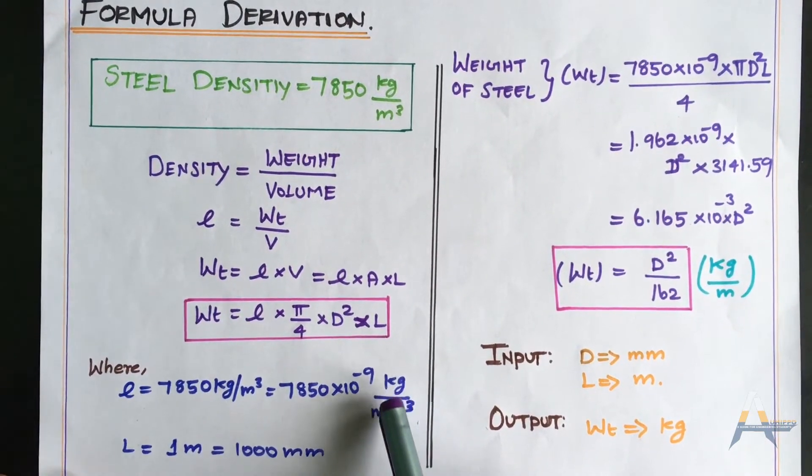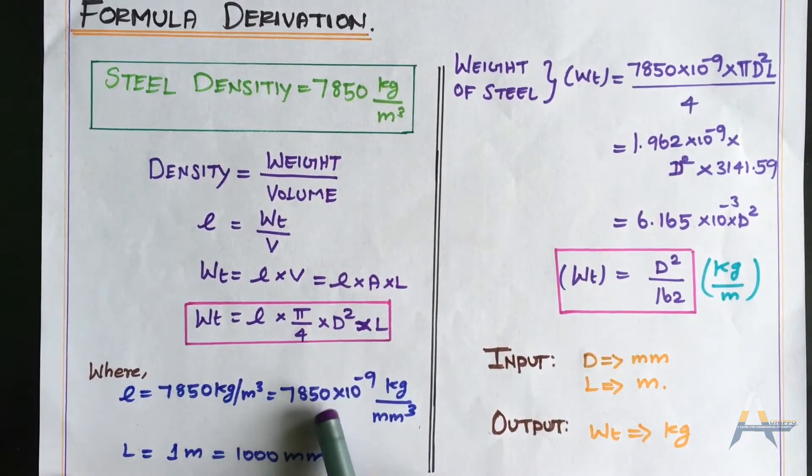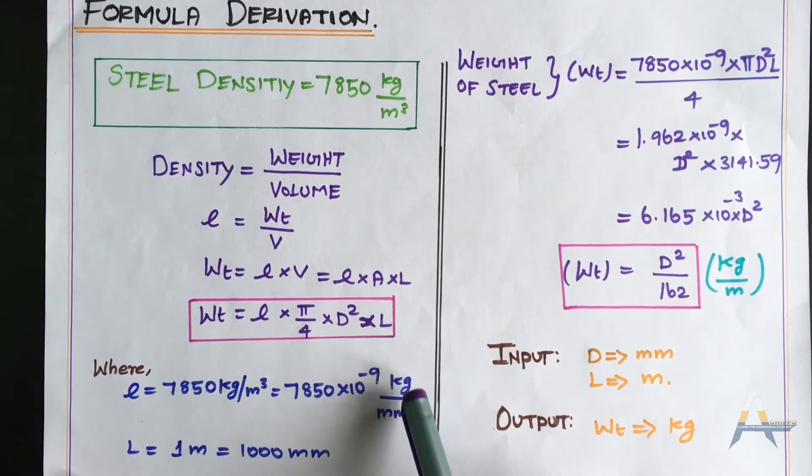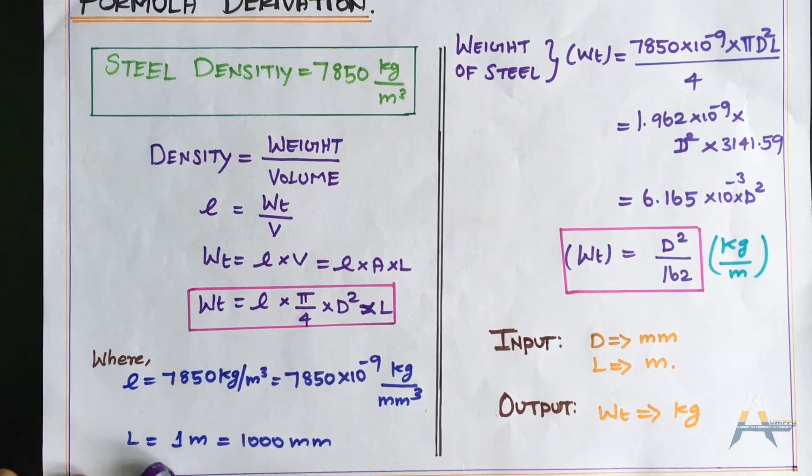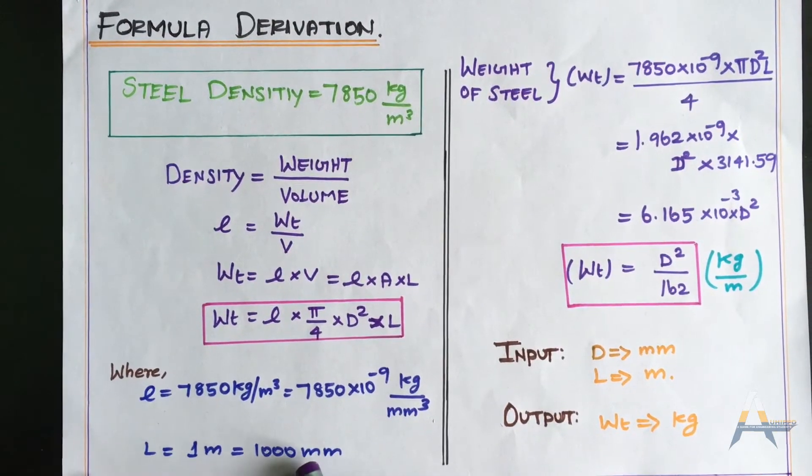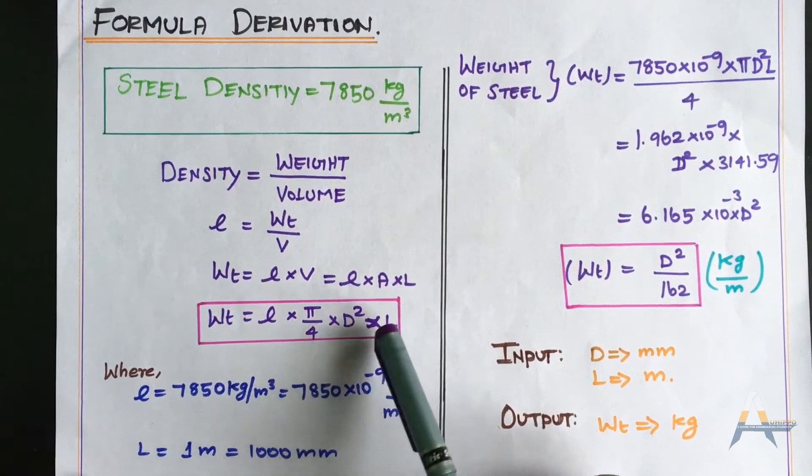One mm³ is 10^-9 m³. So 7850 times 10^-9 kg per mm³. Length is in meters. One meter converts to 1000 mm. These values go into the formula.